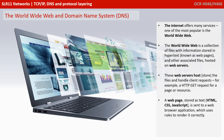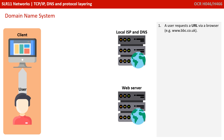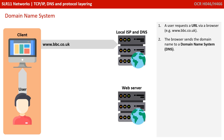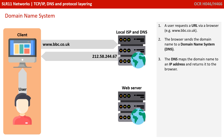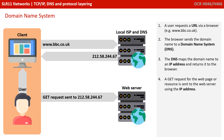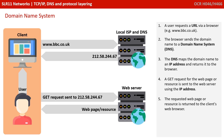A web page stored as text is sent to a web browser application, which uses rules to render it correctly. At a top level, a user requests a URL via a browser — something like bbc.co.uk. The browser sends the domain name to the domain name system; the DNS maps the domain name back to an IP address and returns it to the browser. A GET request for the web page can now be sent to the web server using the IP address, even though you typed in a human-friendly URL, and finally the requested web page is returned to the client's web browser.